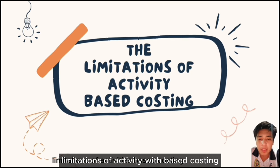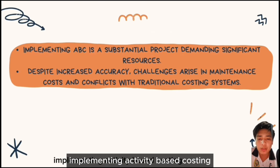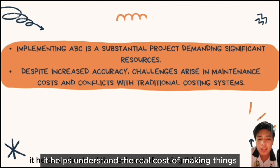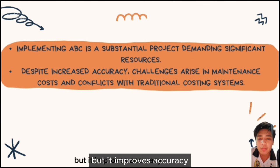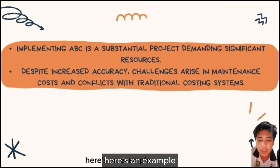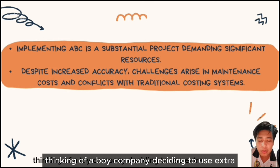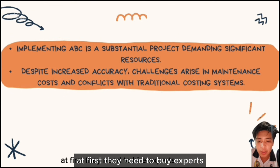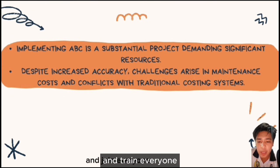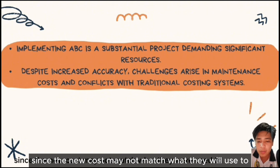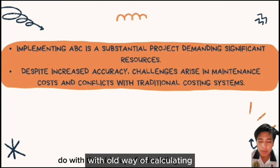Limitations of Activity-Based Costing: Implementing ABC — a way of accurately tracking costs — is like taking on a big project that needs a lot of time and resources. While it improves accuracy, keeping it running can be tricky and there might be clashes with the old way of figuring out costs. For example, a toy company using ABC needs to hire experts, get new computer programs, and train everyone. ABC gives more accurate cost details but is not always easy to maintain, and it can cause disagreement since new costs may not match what they were used to under the old calculation method.